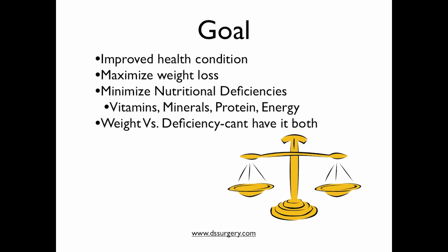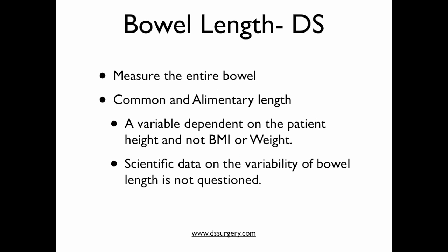When we talk about the duodenal switch operation and how the small bowel is divided, the goal is to improve overall health independent of the amount of weight loss. Weight loss needs to be maximized while minimizing nutritional deficiency, which may involve vitamins, minerals, protein, and overall caloric intake. Weight loss versus nutritional deficiency is a balancing act — the ideal goal is to lose as much weight as possible without developing nutritional deficiency, though these two are mutually exclusive. In my opinion, the bowel lengths — common channel and alimentary limb — should be a percentage of the total bowel length, variable based on the patient's height, not BMI or weight.